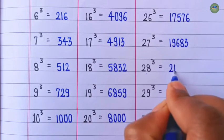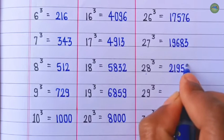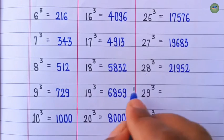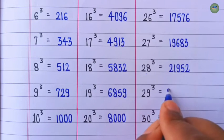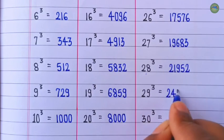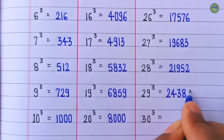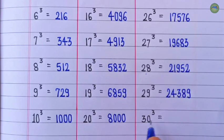Cube of 28 is 21,952. Cube of 29 is 24,389. Cube of 30 is 27,000.